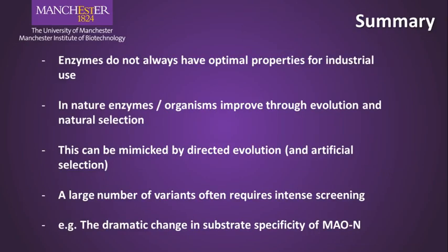In summary, this module has been about recognizing that enzymes from the natural environment do not always have optimal properties for industrial use, so we need to improve them. In nature, this improvement takes place through natural selection and evolution, and we can mimic this process of directed evolution in the laboratory by specifically screening for improved biocatalysts. This process involves generating a large number of variants and intense screening to find optimal activity, demonstrated here by the directed evolution of monoamine oxidase N and its application to the synthesis of a building block for telaprevir.